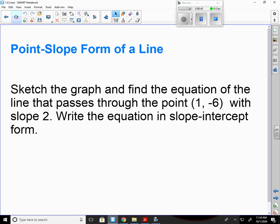Sketch the graph and find the equation of the line that passes through the point (1, -6) with a slope of 2. Write the equation in slope intercept form. So in order to do this, when I'm given a point and a slope, I have to write it in point slope form in order to get it to slope intercept form. So I have to start with point slope form.